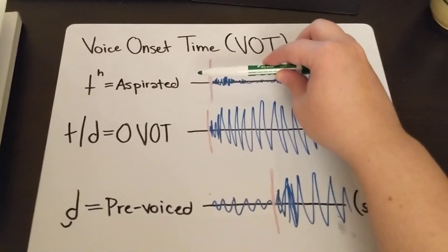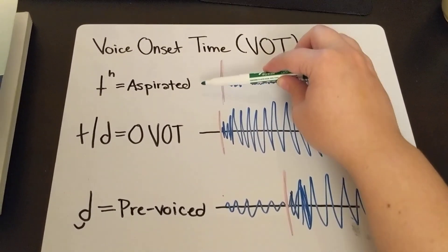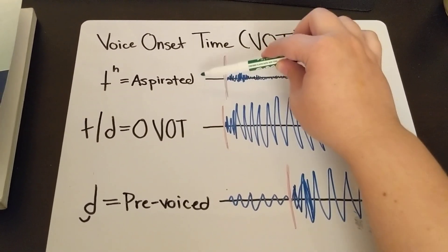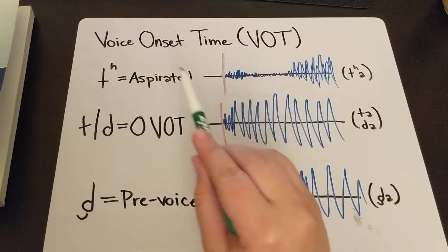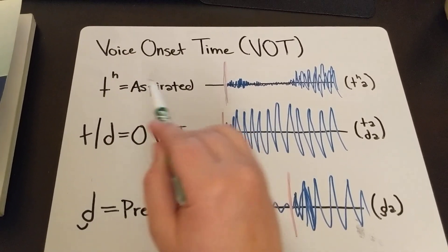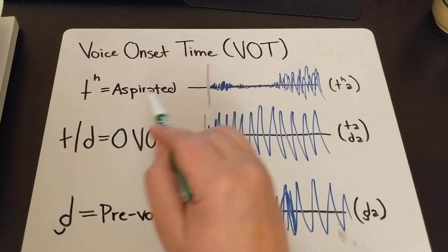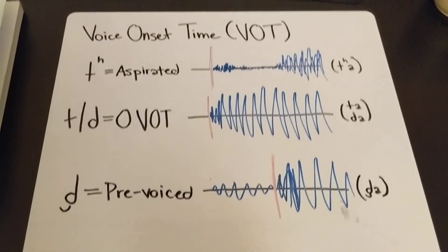You have at one end of the spectrum something that's clearly aspirated. This has a long voice onset time, a long positive voice onset time. This is called a positive voice onset time, just because of how we measure it.